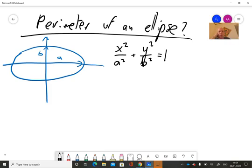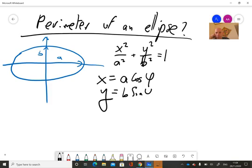It is useful to introduce a parameter phi such that x equals a cosine phi and y is b sine phi. So x and y describe the curve of an ellipse. It is now parameterized by phi where phi is between zero and two pi.